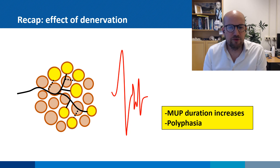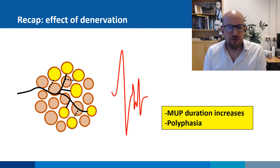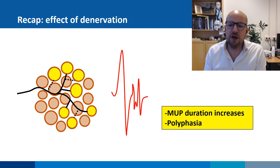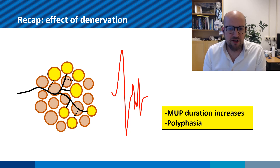Now what happens in cases of denervation is that we see remodeling of the motor unit. With the loss of motor units, another motor unit starts to re-innervate these muscle fibers. However, at the early stages, the connections to these muscle fibers are quite unstable and not fully mature, which means that it may take a bit longer for these muscle fibers to become active. This results in a motor unit potential that has a slightly longer duration and is what we call polyphasic, meaning it has several phases.